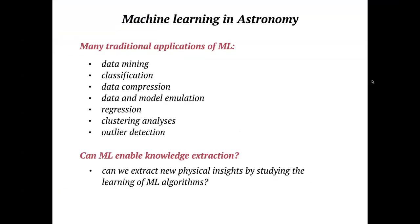Machine learning has now become a very traditional approach in many applications of astronomy. It goes back to classifications of stars, data compression problems, as well as model emulation, and all sorts of applications where it's now become the traditional method. What we've been trying to do is to see whether we can use machine learning to actually extract new physics, new physical insights by studying how machine learning works — whether we can actually learn something new about the physics of a given problem by learning how the model learns.